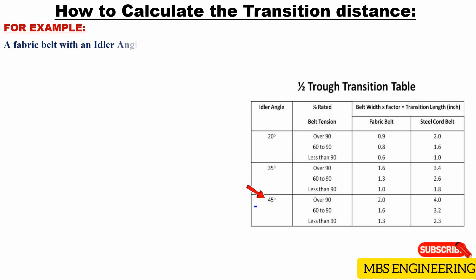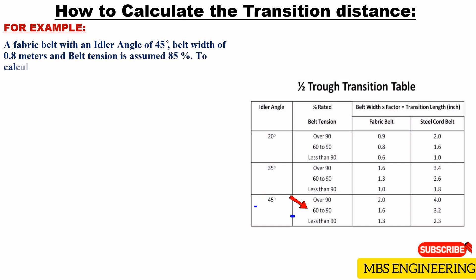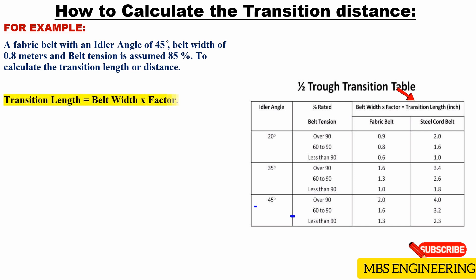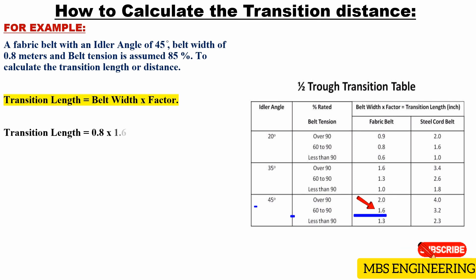Sample example: A fabric belt with an idler angle of 45 degrees, belt width of 0.8 meters, and belt tension assumed at 85%. Transition distance = belt width × factor = 0.8 × 1.6. Therefore, the obtained minimum recommended transition distance is 1.28 meters.